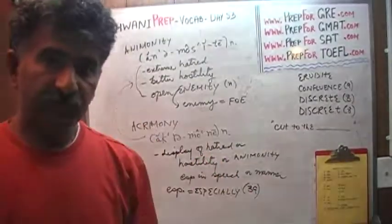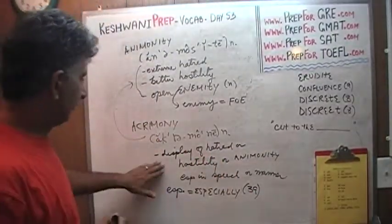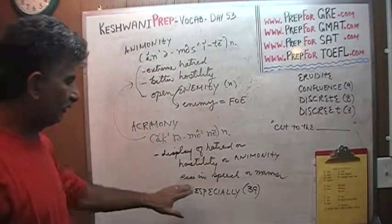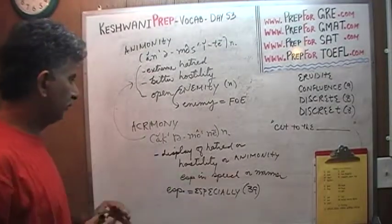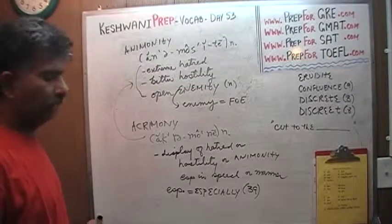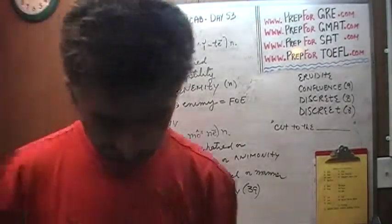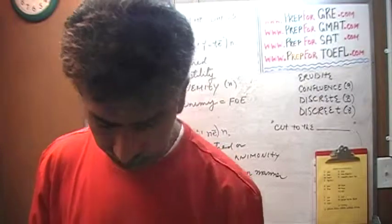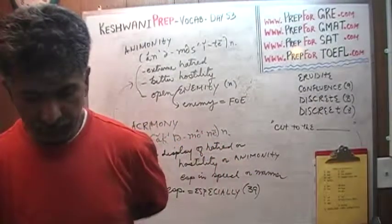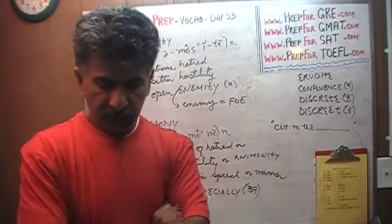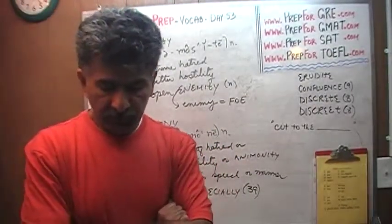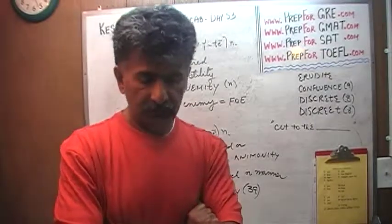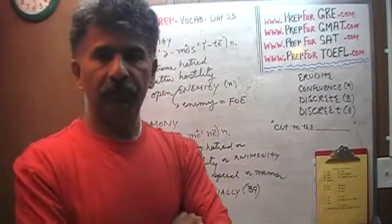Acrimony means particularly a display of hostility expressed in speech or manner. They are all basically related words but they do have certain nuances. So again, the words we learned today were: caustic, vitriolic, animosity, and acrimony — four wonderful words to know when talking about a person that you really hate.